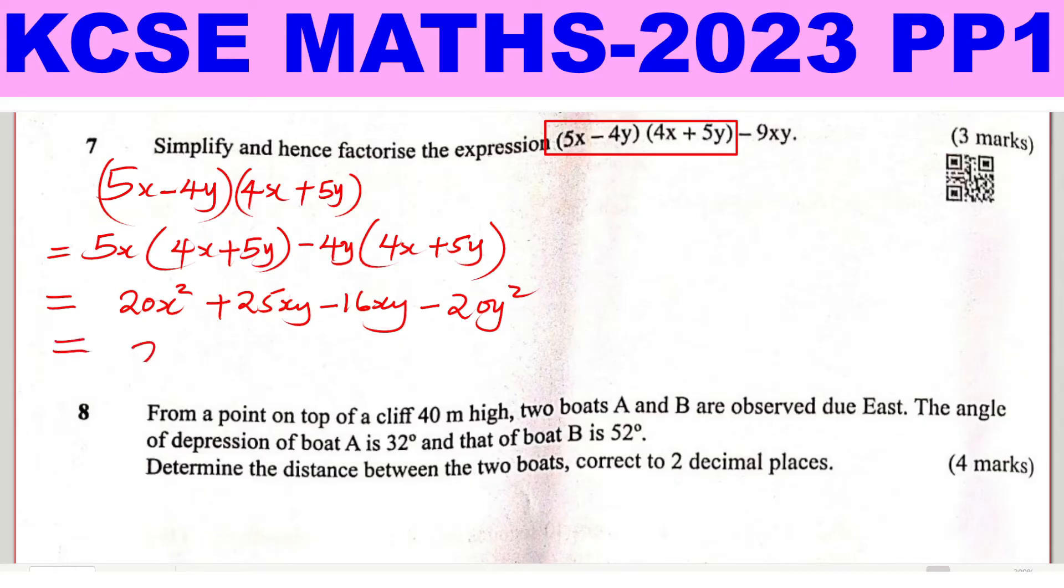Combining like terms, you have 20x squared, 25xy subtract 16xy is going to give 9xy minus 20y squared.